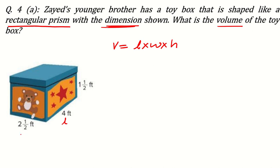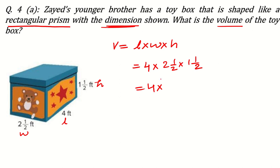Any one side you can take as length, another as width, and another as height. Put in the values: length is 4, width is 2 and a half, height is 1 and a half. Since these are mixed fractions, write them as improper fractions: 2 and a half becomes 5 over 2, and 1 and a half becomes 3 over 2.